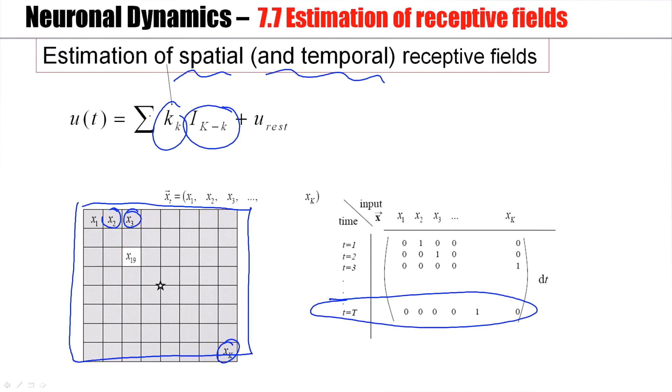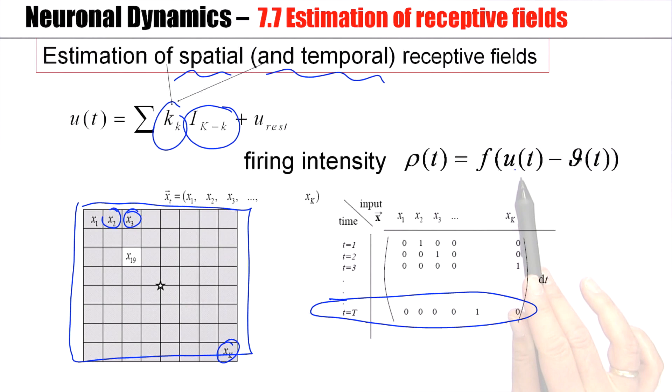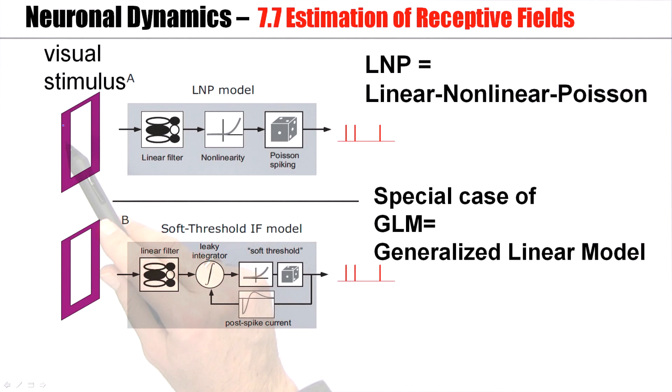And then we take this membrane voltage, the model voltage, and say, well, there's a certain firing intensity. The higher the voltage, the more likely is the neuron to fire. And this is called the linear nonlinear Poisson model. So we have our stimulus. We have a linear filter that would be our vector k, the filter k sub index k. Then we have some nonlinearity. That's our function f. We use this to generate spikes with an inhomogeneous Poisson process. And this gives the linear nonlinear Poisson model.